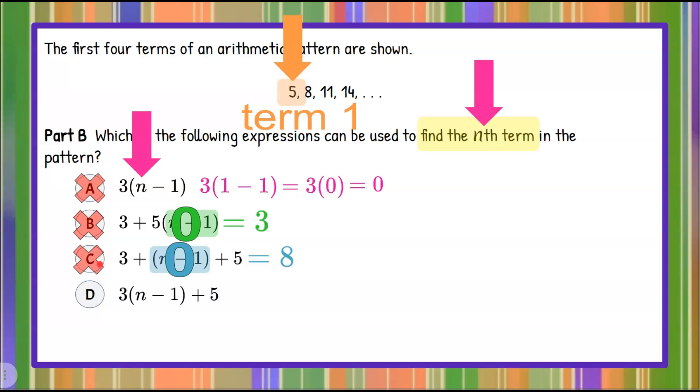So it looks like D is our answer, but we always want to make sure. So once again, n subtract 1. 1 subtract 1 for term 1 has a value of 0. The product of 3 and 0 is 0. So I'm left with 5, and that is indeed our first term.